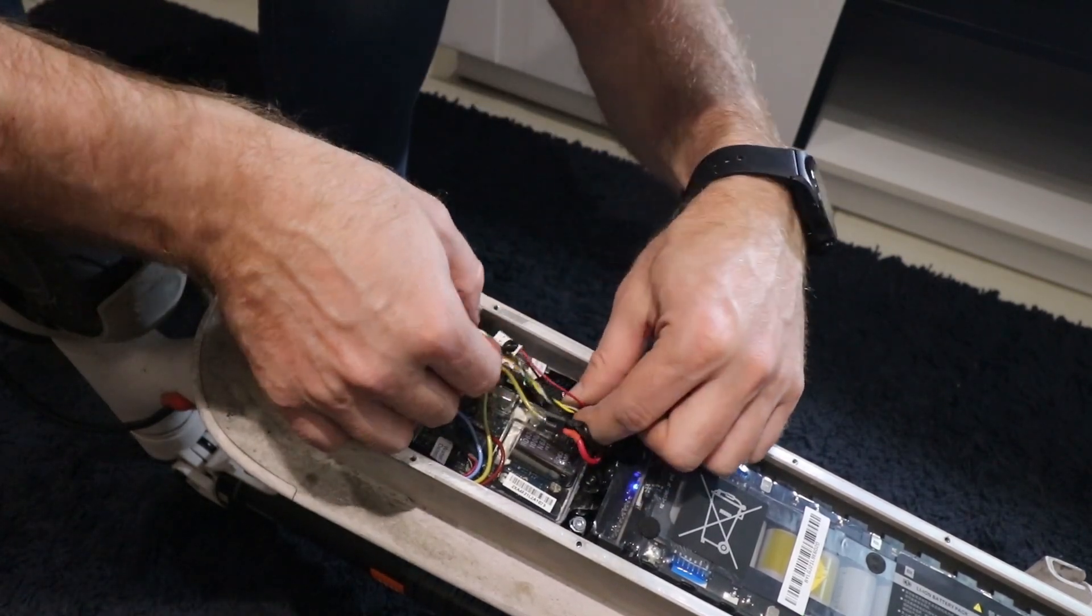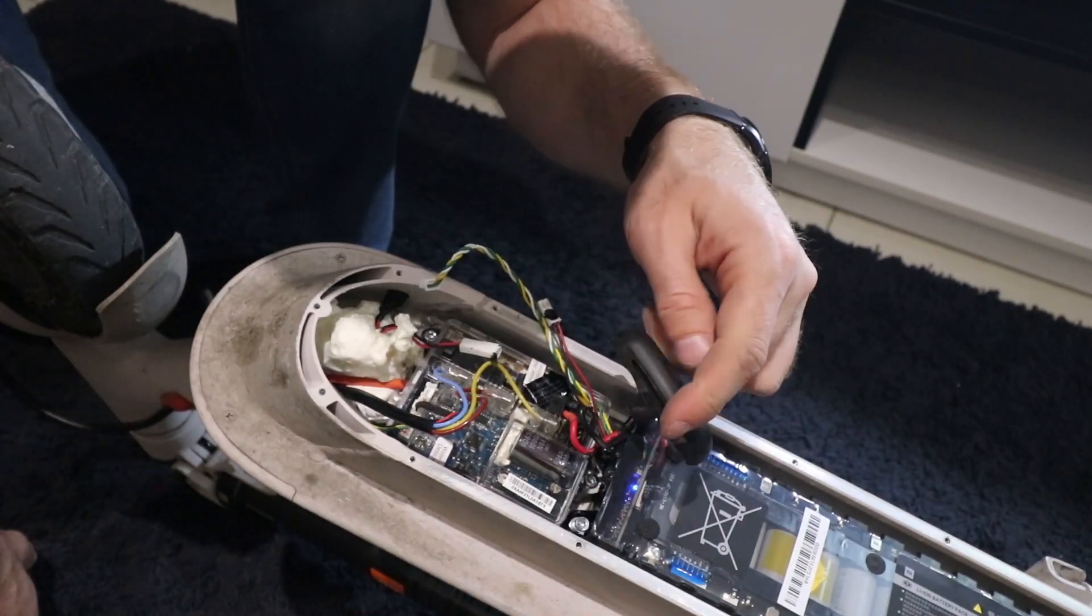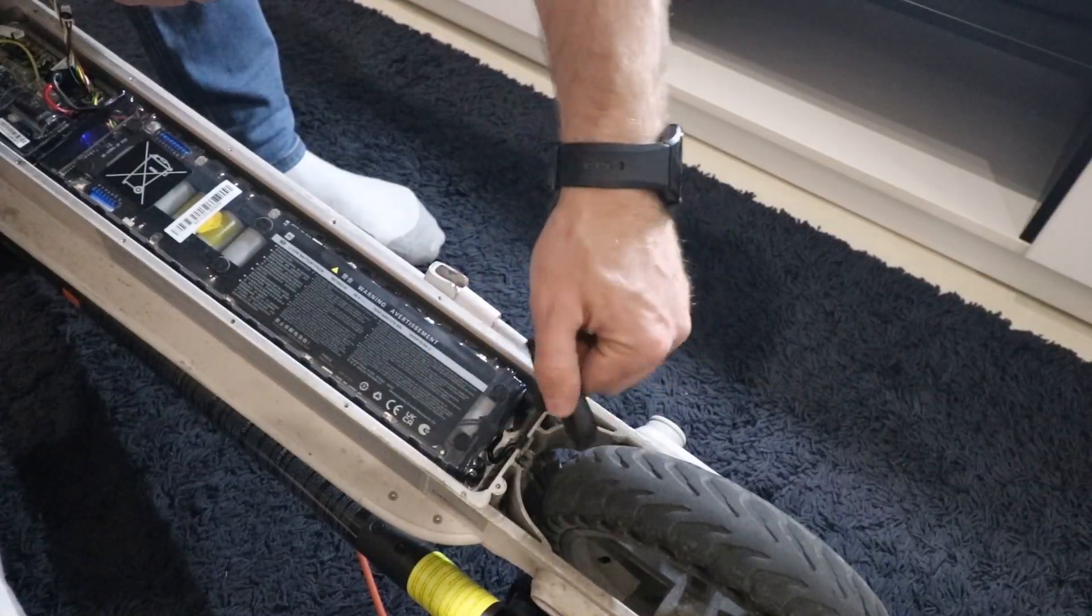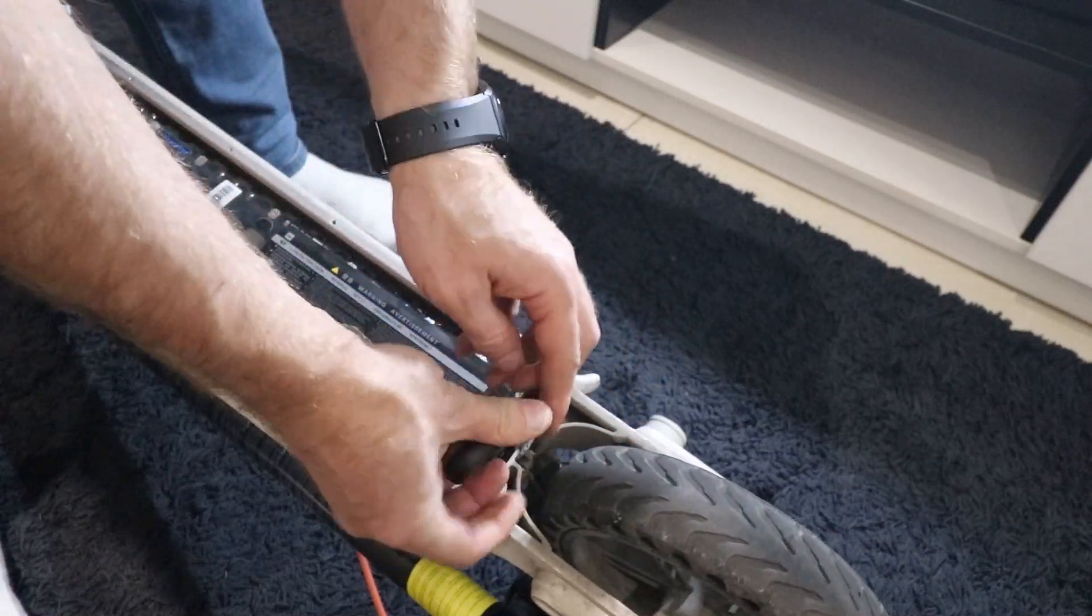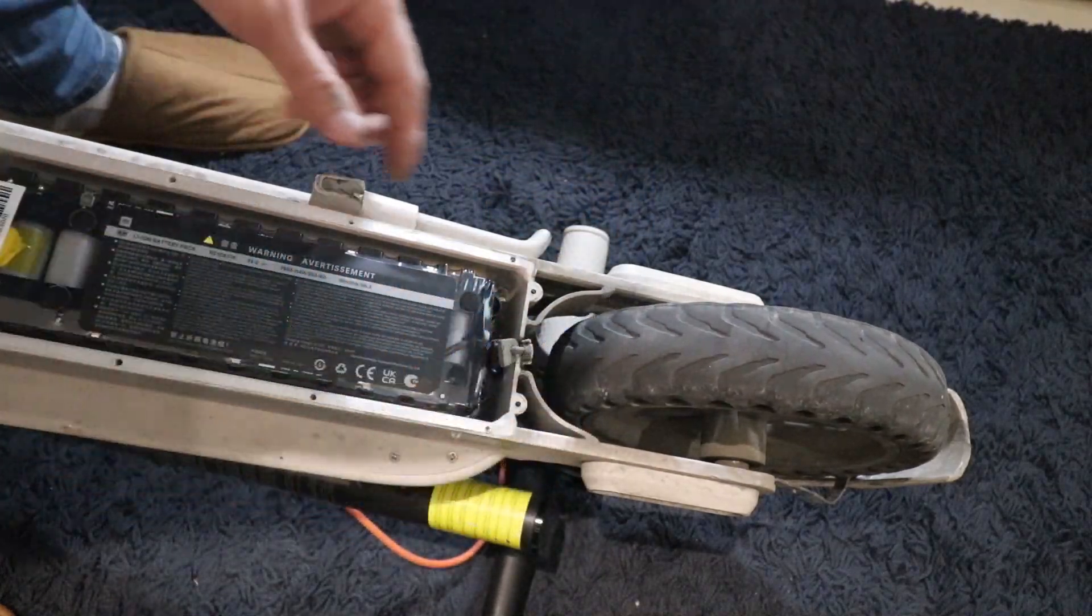Now you can unscrew the battery from the scooter which is connected with four bolts. Also release the plug for the rear lamp which you can do with a pair of forceps.